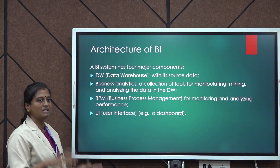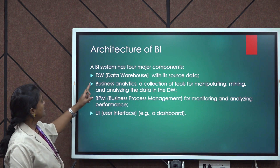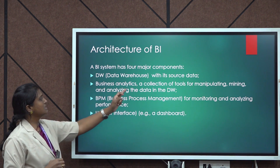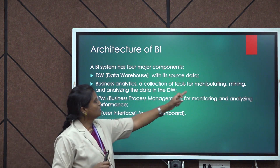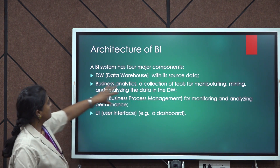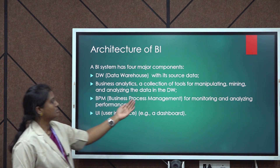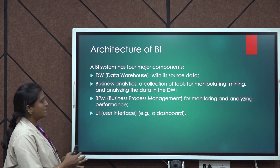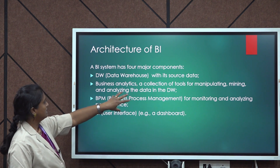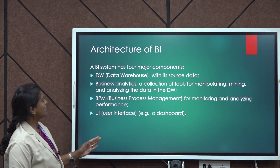The architecture of business intelligence has four major components. First is a data warehouse, which is the source of stored data. Second is business analytics — a collection of tools such as mining algorithms and visualization tools used for manipulating, mining, and analyzing the data. Third is business process management, where higher-end officials monitor and analyze performance. Fourth is a user interface to view and operate all these things.